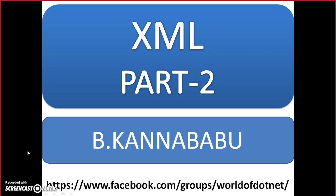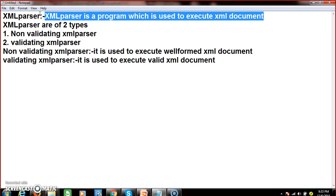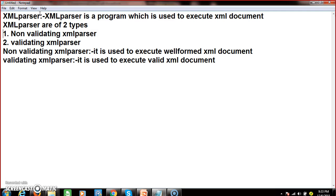In this video we will initially discuss about XML parser. The output of any XML document will be displayed on the browser. In order to execute the XML document within the browser we need one software, which is nothing but the XML parser. XML parser is a program used to execute the XML document. XML parsers are basically of two types: one is non-validating XML parser and the other is validating XML parser. Non-validating XML parser is used to execute a well-formed XML document, and validating XML parser is used to execute a valid XML document.